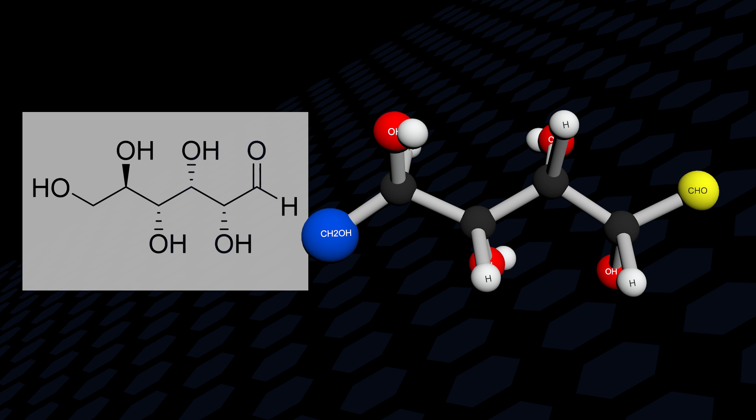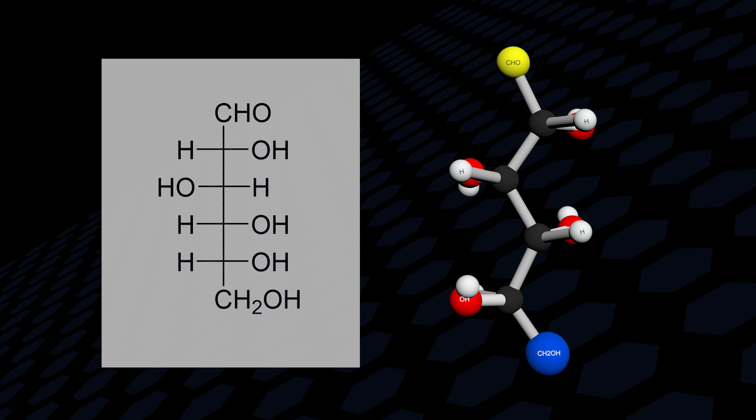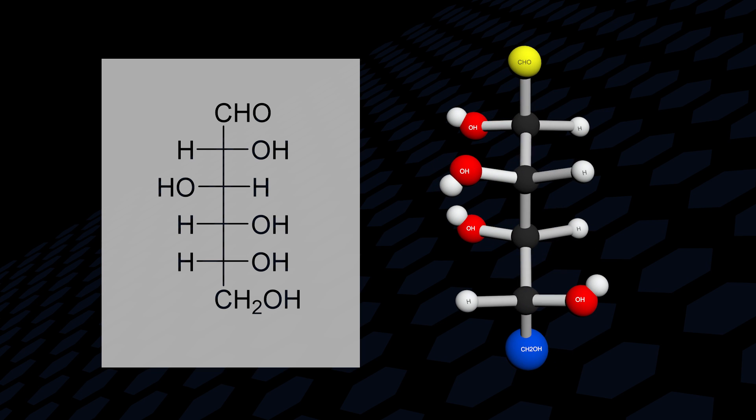To go from a zigzag line structure to a Fischer projection, it will be necessary to rotate bonds because not all horizontal bonds are pointing towards you.